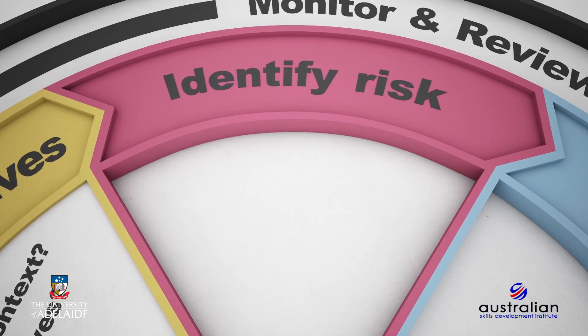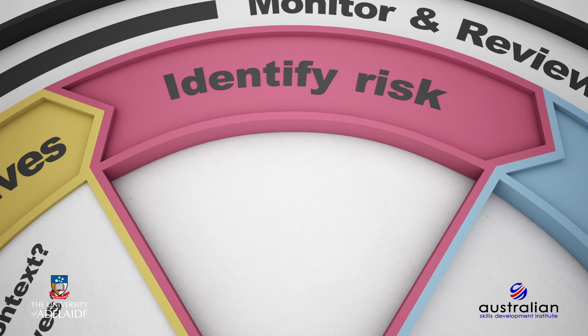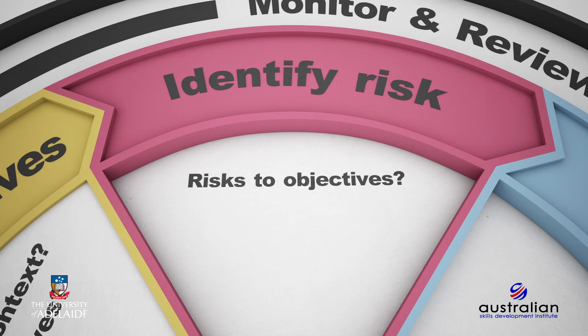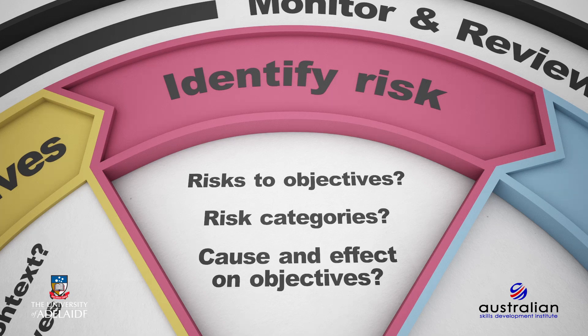Risk identification considers the types of risks or uncertainties that may impact on achieving our set objectives. Identifying a range of possible risks takes practice and experience. Brainstorming is a common technique that is used, and it may be beneficial to consider different categories or types of risk and to consult with your team and other stakeholders. Key questions you will need to consider in this stage are: how will you identify risks to objectives? What categories will be used? And what are the cause and effect of risks on your objectives?